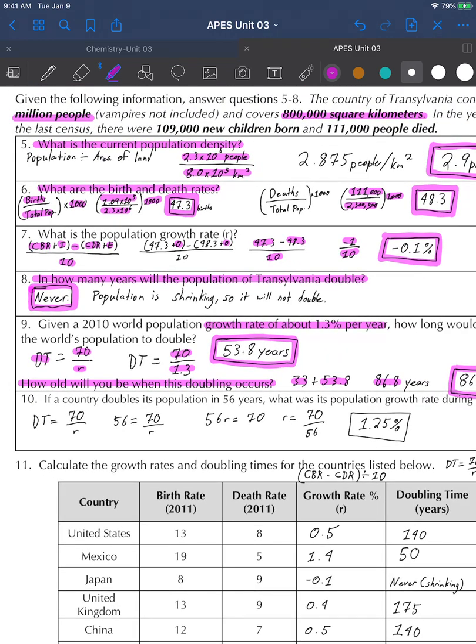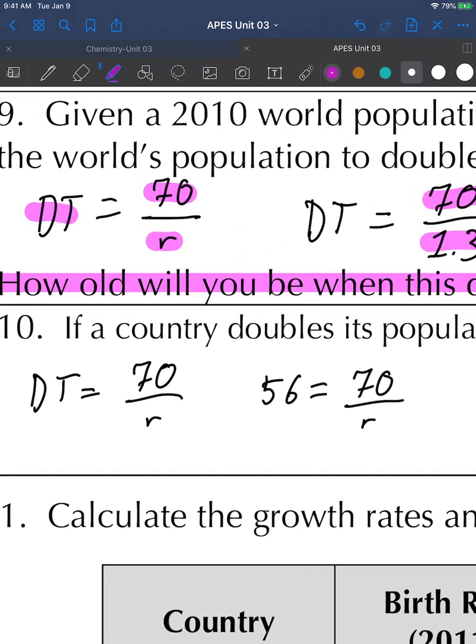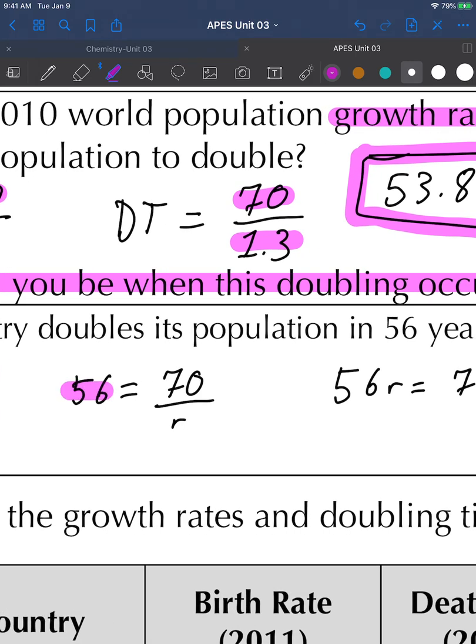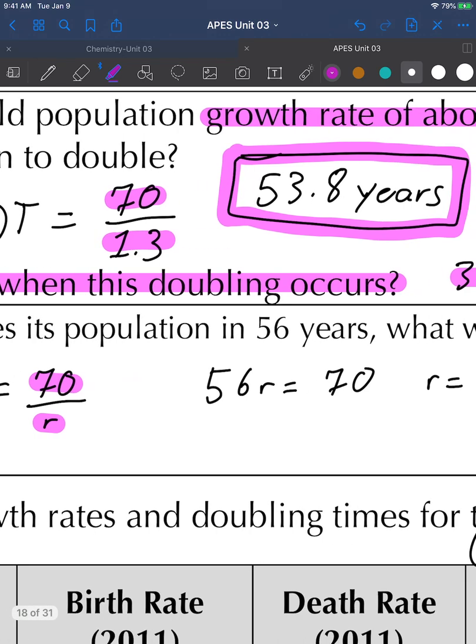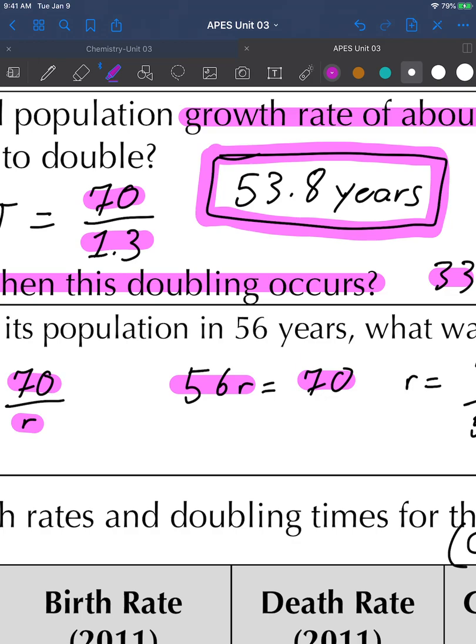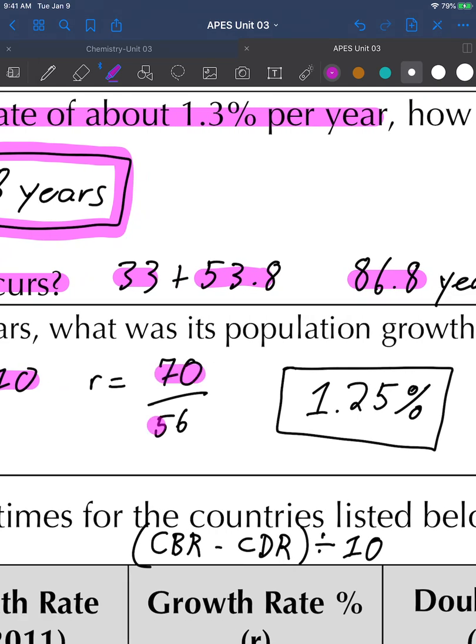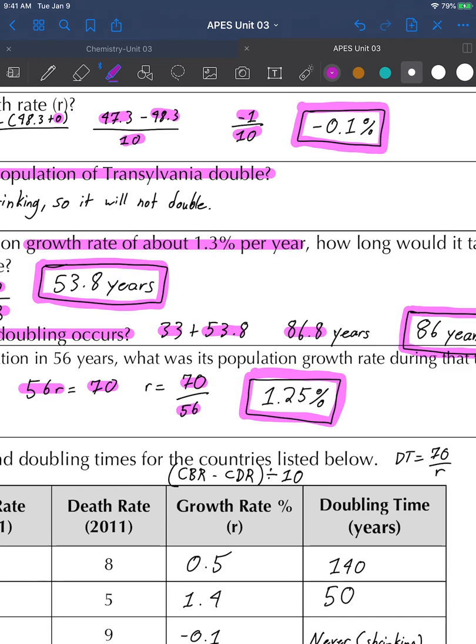We have another doubling time population problem, but this time we're using a different application of the formula. This time doubling time is given to you and you have to work backwards to solve for the population growth rate. This is just a single step algebraic equation. I like to write down my formula and then fill in what I know. This time I know doubling time, I know that 70 stays constant, and I'm solving for growth rate. I cross multiply and I get 56r equals 70. I divide both sides by 56, and the growth rate equals 70 divided by 56, which gives me 1.25%. I can then double check this and do 70 divided by 1.25 and see if that gives me 56 years, which it does.